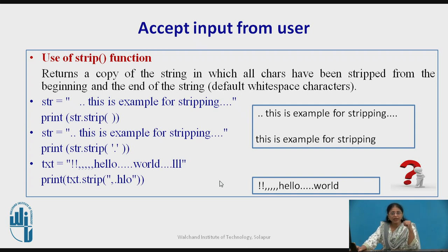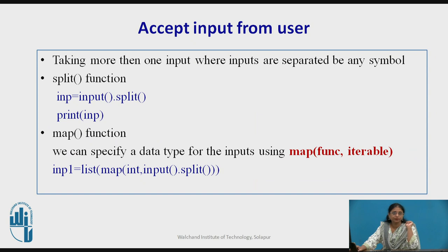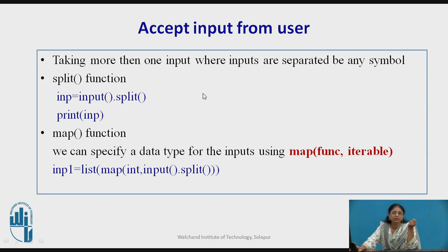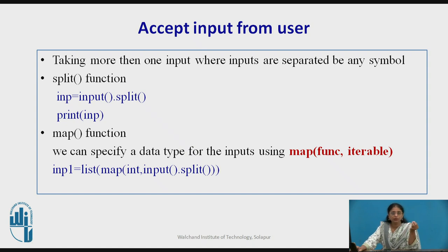So first get the input and use the strip function if required. Many times we want multiple inputs — not a single number or string. That input can be separated by spaces or commas; generally these are the two separators used, but you can have any separator. For that, we use the split function, which will separate out the input. By default, space is considered the separator, but you can use comma, dot, and so on as per the input.